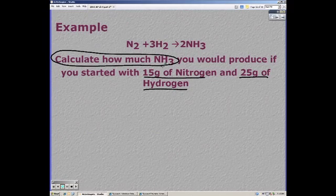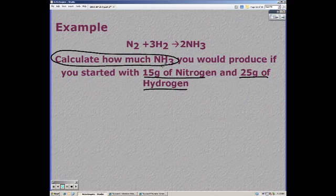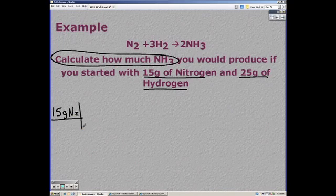We're going to ignore the 25 grams of hydrogen and convert 15 grams of nitrogen to grams of NH₃, then we're going to do the same thing with the 25 grams of hydrogen.